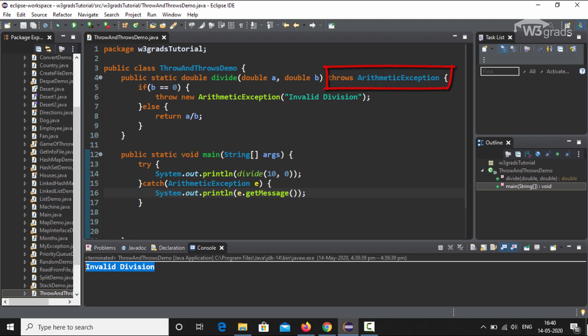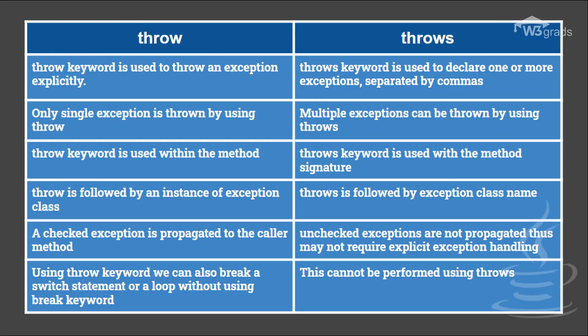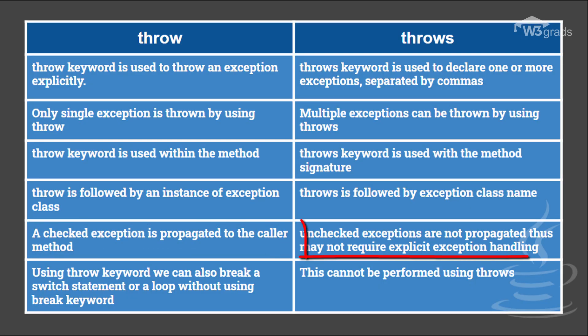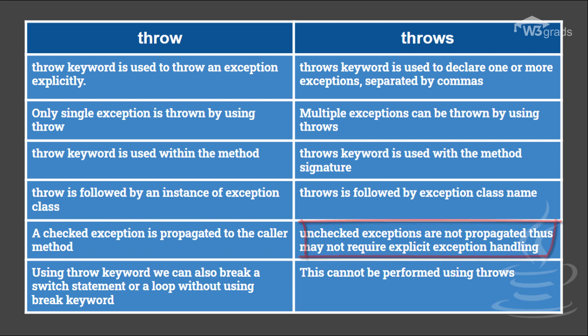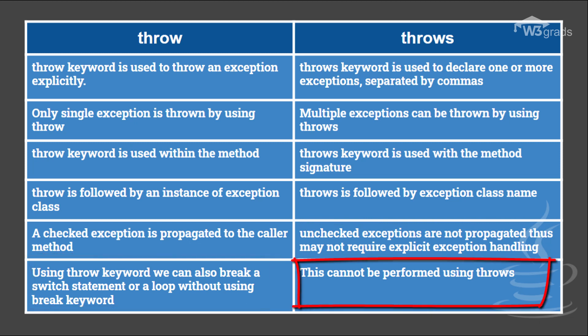The second-to-last point: a checked exception is propagated to the caller method using throws, while unchecked exceptions are not propagated and may not require explicit exception handling. The last point: using the throw keyword, we can also break a switch statement or a loop without using the break keyword, which cannot be performed using throws.